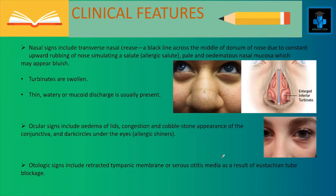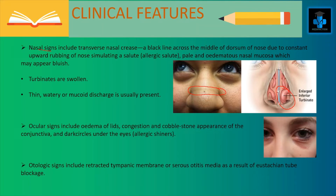Now let's see the clinical features, starting with nasal signs. The nasal signs include transverse nasal crease — a black line across the middle of the dorsum of the nose due to constant upward rubbing of the nose, simulating an allergic salute. There is also pale and edematous nasal mucosa which may appear bluish in color. The turbinates will be swollen, and thin watery or mucoid discharge is usually present.